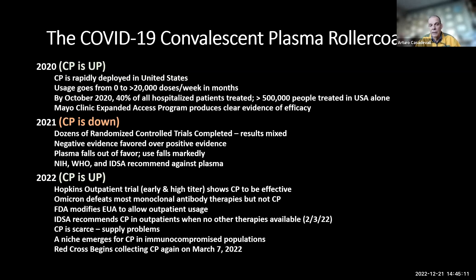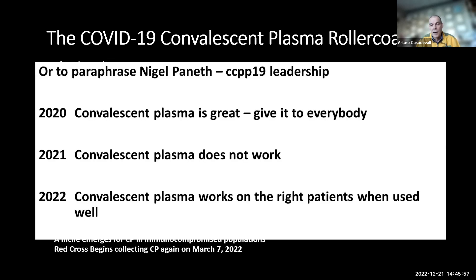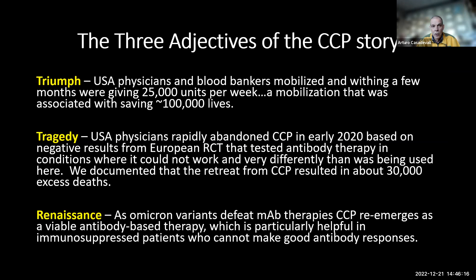The problem today is educational. Blood bankers stopped collecting plasma because it wasn't being used. Most of the country is awash with high-quality plasma — it is estimated that one out of three units in the country has an amount of antibody far superior to anything used in 2020, as a result of COVID-19 and the vaccine. The Red Cross again began collecting plasma. To paraphrase my good friend Nigel Panis: in 2020, convalescent plasma is great — give it to everybody. In 2021, convalescent plasma doesn't work. And what happens with most therapies: convalescent plasma works in the right patients.